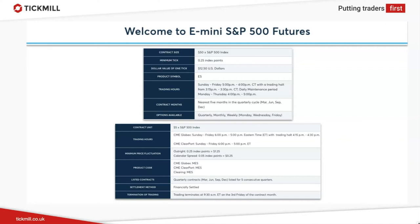E-mini contracts are available on a wide range of U.S. stock market indices, commodities, and forex currencies. However, when traders refer to 'the e-mini' or 'the spoos,' they're generally referring to the most important one — the futures contract that tracks the S&P 500. E-mini futures were originally launched in September 1997 to attract non-professional investors into trading index futures. Previously, the only option had been the large S&P contract, but it had become too expensive for the retail trader, so the CME created the e-mini, which was one-fifth the size and required only one-fifth of the margin to trade.